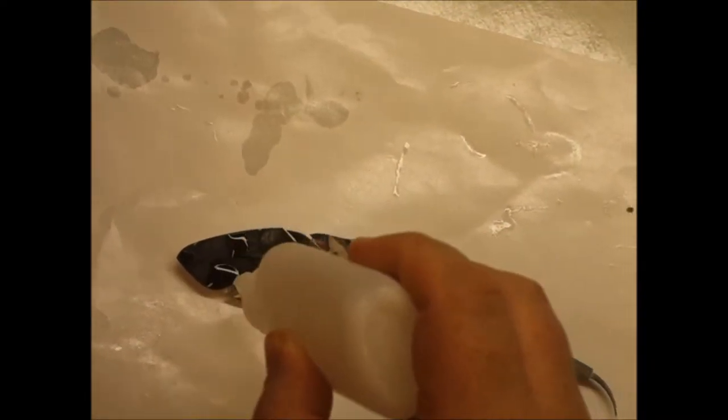After all the unbound powder is gone, we need to infiltrate the print. This is done both to make it stronger and to bring out the color.